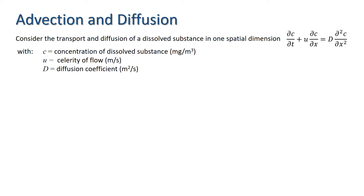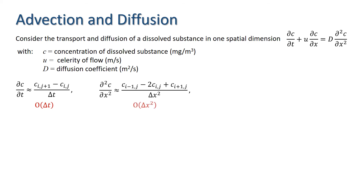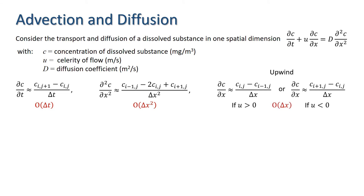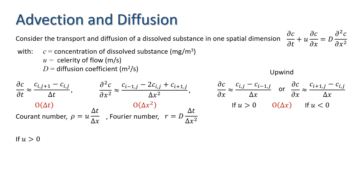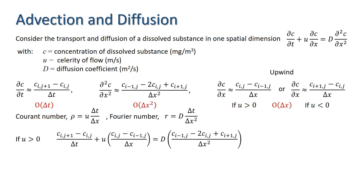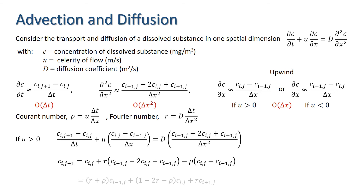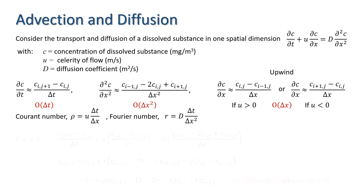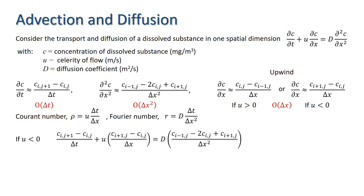As before, we take a first-order forward difference approximation to the time derivative and a central difference approximation for the diffusion term. For the advection term, we use an upwinded approximation since information travels from upstream to downstream; this differs depending on whether u is positive or negative. For positive celerity, substituting into the advection-diffusion equation and rearranging gives an explicit scheme; for negative celerity we have a different formulation.